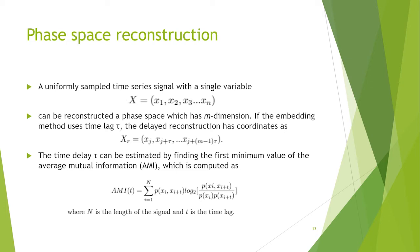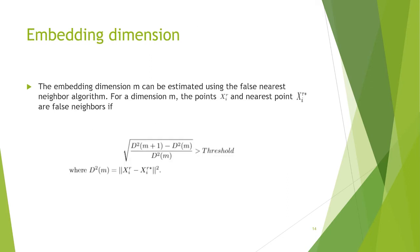Some background knowledge on phase-space reconstruction: a uniformly sampled time-series signal with a single variable x can be reconstructed in a phase space of m dimensions. If the embedding method uses time-delay tau, the delayed reconstruction has coordinates r. The time-delay tau can be estimated by finding the first minimum value of the average mutual information. The embedding dimension m can be estimated using the false-nearest-neighbor algorithm.